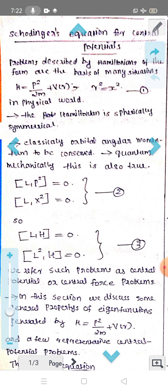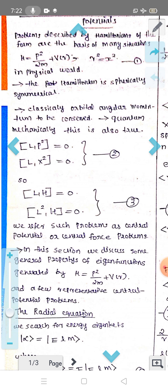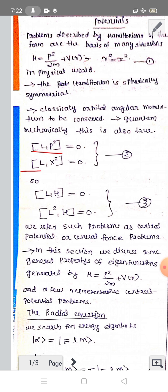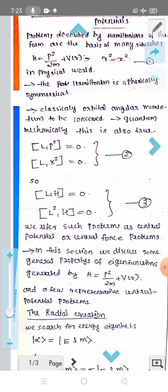Quantum mechanically this is also true. From the angular momentum commutation relations we know that [L, p²] = 0 and [L, x²] = 0. Since p² and x² commute with L, then [L, H] = 0, and [L², H] = 0, where H is the Hamiltonian. We refer to such problems as central potential or central force problems.